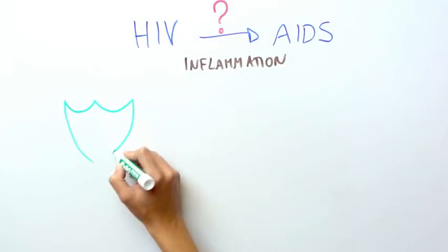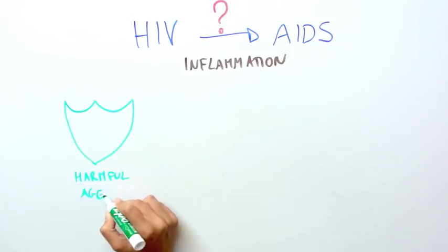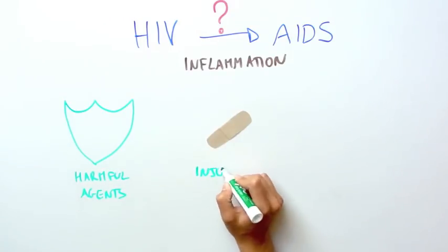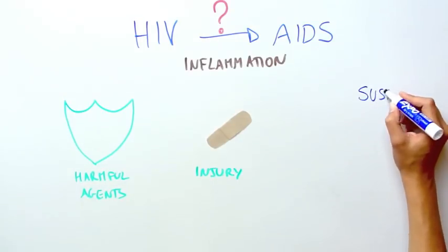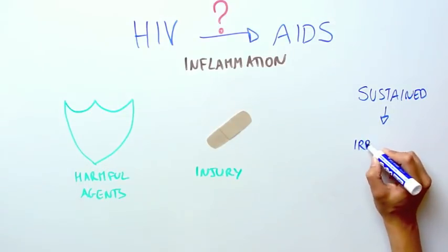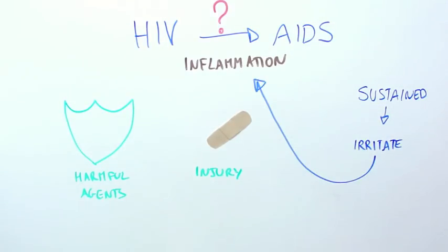Inflammation is the body's way of protecting itself from harmful agents or heal itself from injury. But when inflammation is sustained, it can irritate the body and be harmful, in this case by supporting the progression to AIDS.